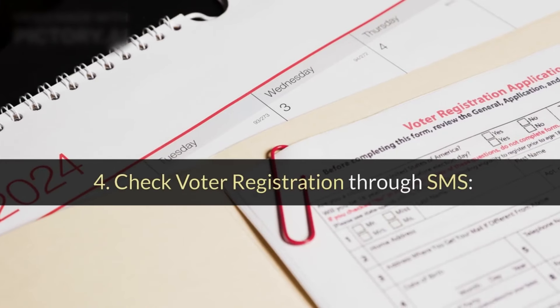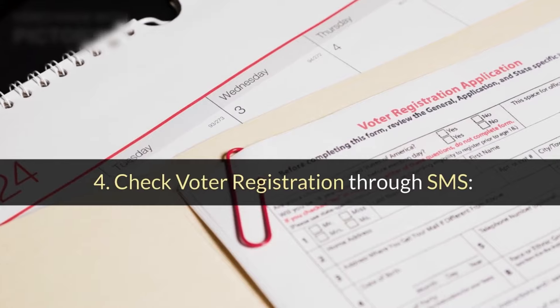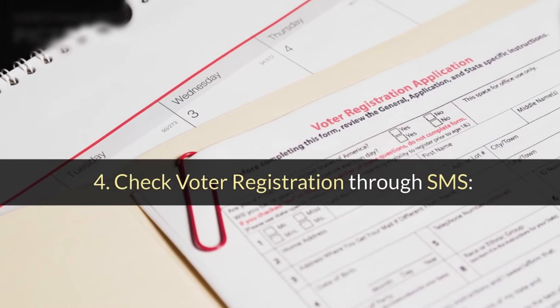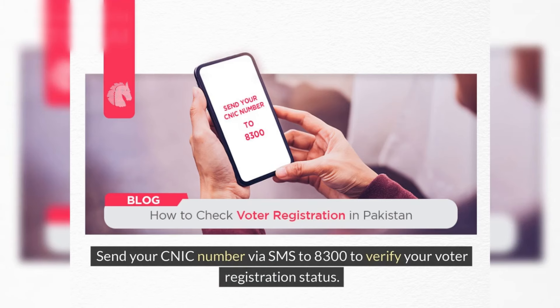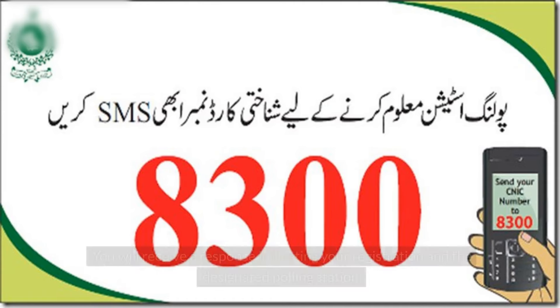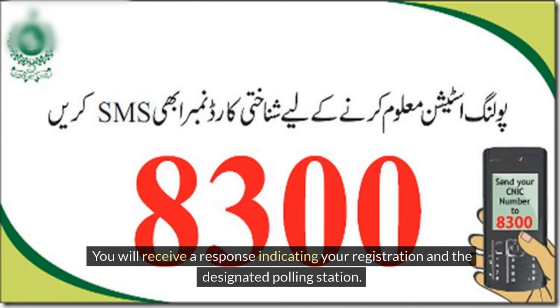Step 4: Check voter registration through SMS. Send your CNIC number via SMS to 8300 to verify your voter registration status. You will receive a response indicating your registration and the designated polling station.